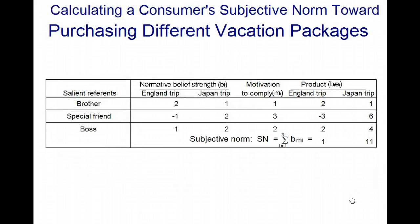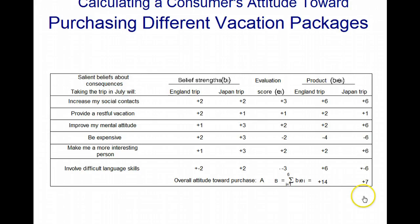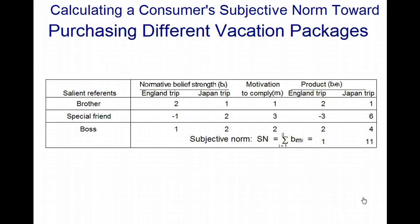However, when we add in social norms — such as normative strength and how important your brother, special friend, or boss is — it changes the score considerably. The boss carries quite strong motivational influence, and the special friend's influence is somewhat negative for the Japan trip. Adding subjective norms here, England goes up by one but Japan goes up by 11. You can see why this is a useful theory of attitude — it includes both internal thinking and the impact of other people.